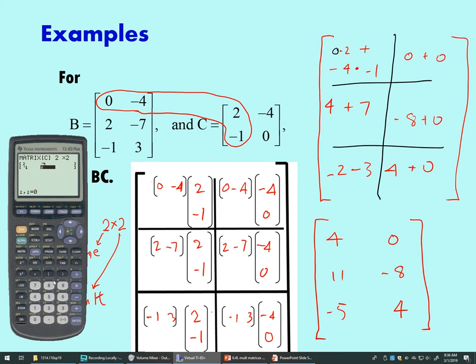Now we go back to the home screen. Second mode is quit. Let's go get matrix B: second X inverse, names, select B, enter. Now we'll go get C. We hit enter. And it looks like we got it. Our calculator confirms our work in matrix multiplication. And that will get it done for this objective.